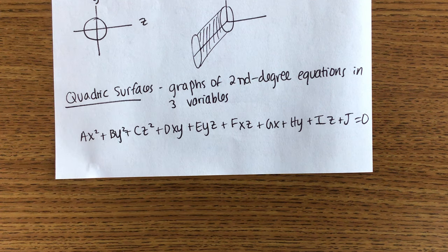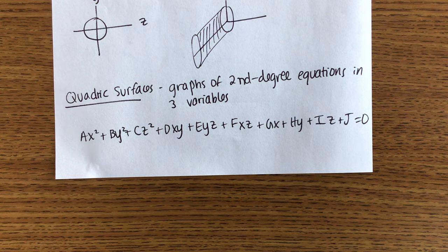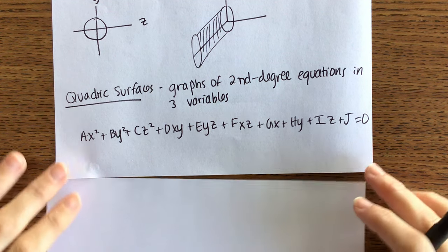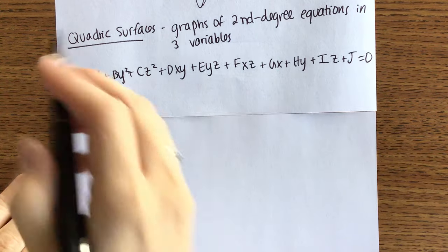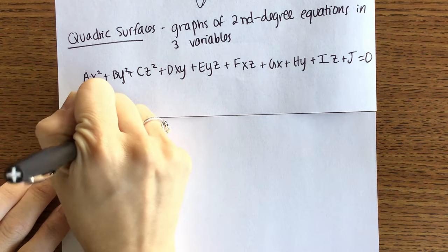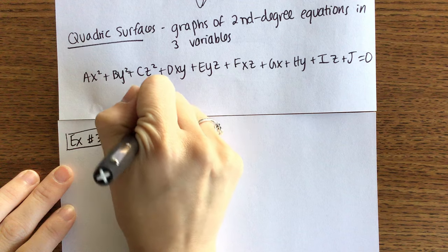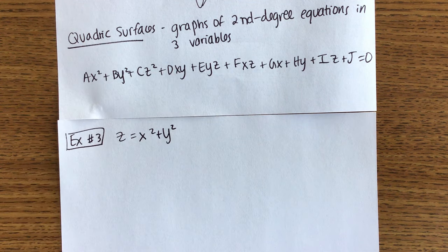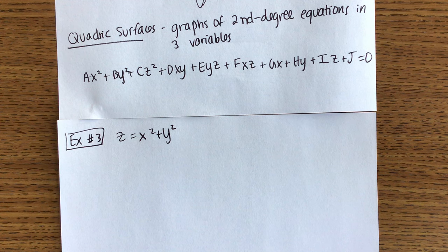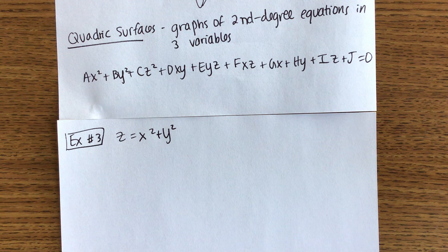We're going to look at six general shapes. This is where our drawing skills really need to be good. So what I'm going to do with each of these equations is show you different ways to analyze the equation so we know some things about the graph. I think that's a better idea than just memorizing everything.